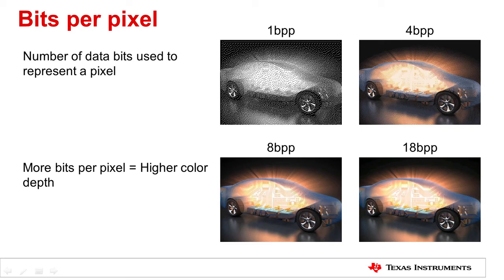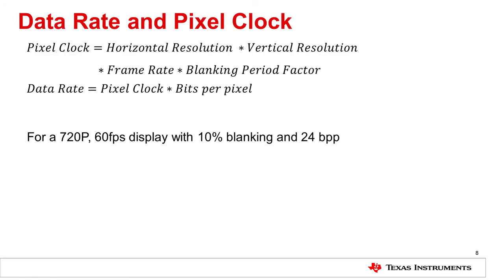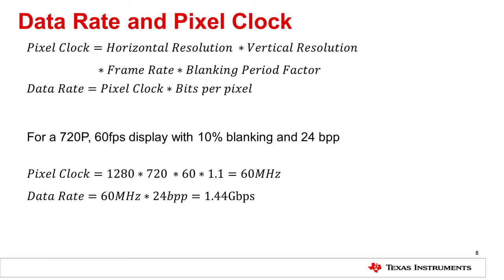Now that we have a basic understanding of the terms, let's revisit the equations and look at an example. For a 720p, 60 frames per second display with 10% blanking and 24 bits per pixel, the pixel clock should be 60 MHz and the data rate is 1.44 gigabits per second.